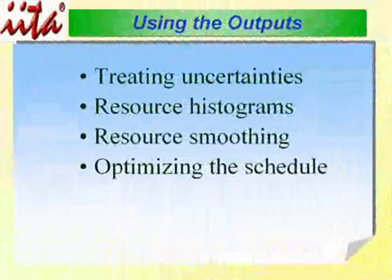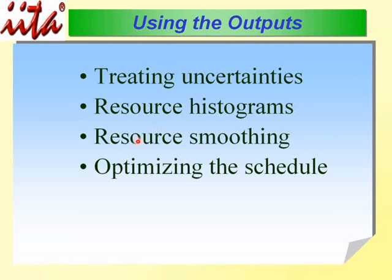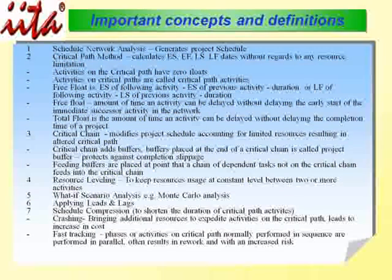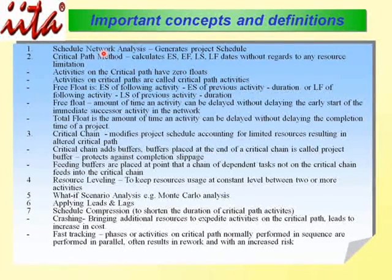We are starting with the output of Critical Path Analysis, and we are going to talk about how to treat uncertainties, how to do and use a resource histogram, resource smoothing, and optimizing the schedule. We will first review some key issues we have discussed earlier.